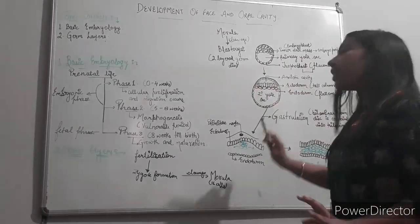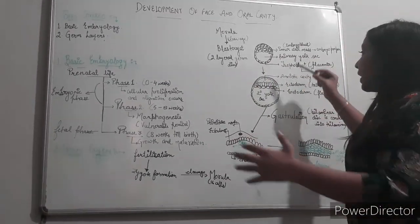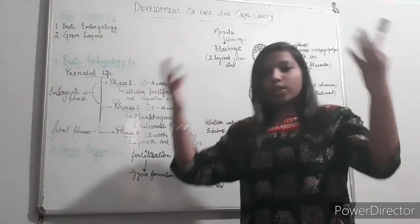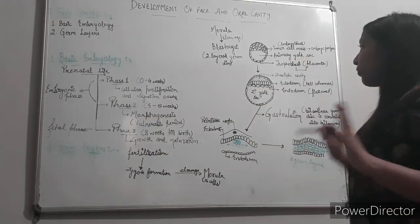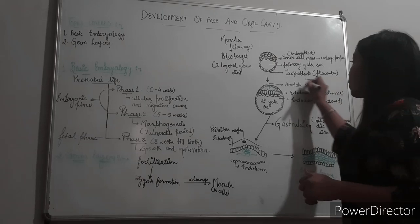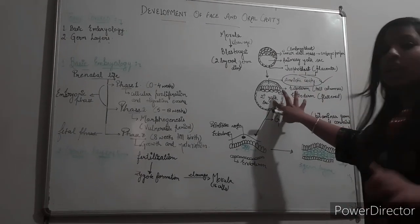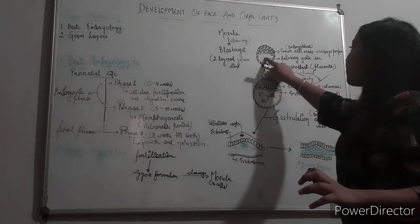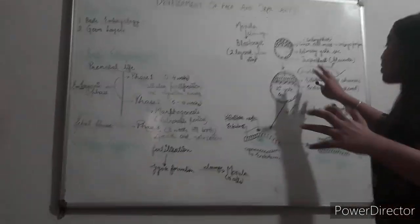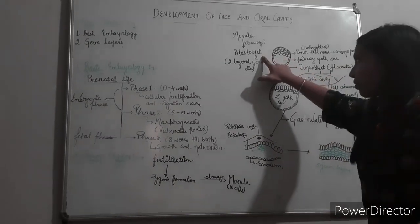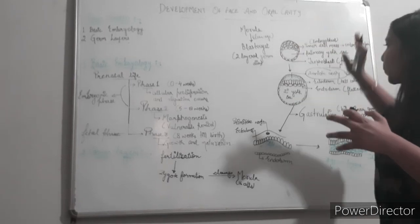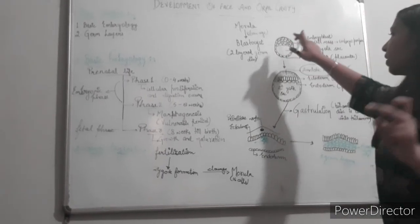Then after some time, a two-layer disc is formed. For example, inner cell mass will form ectoderm and endoderm. Ectoderm are tall columnar cells and endoderm are flattened cells. They will form amniotic cavity and secondary yolk sac. This primary yolk sac is converted into secondary yolk sac. In the blastocyst, the inner cell mass is converted into two germ layers and primary yolk sac is converted into secondary yolk sac.